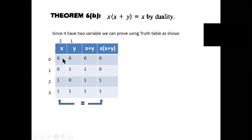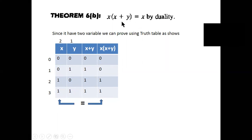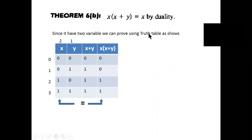Then 0 multiplied by its value, 1 into 1 equals 1, 1 into 1 equals 1. So the left hand side and right hand side — both x columns — are equal. So we prove this theorem using the truth table.